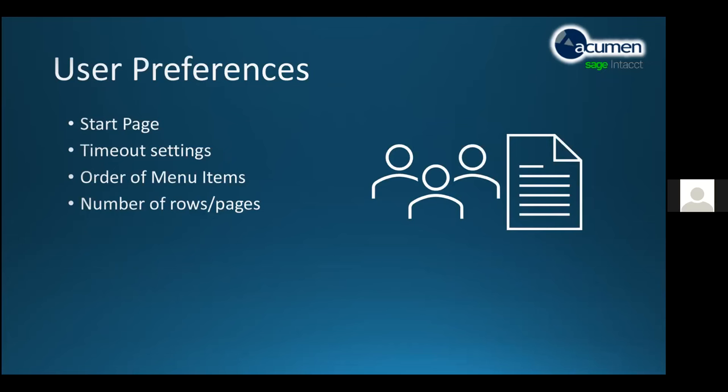When you log into the system, you can control a number of different things. You can control where you start — is it on a dashboard, in the general ledger, or on the home screen so you can easily switch from entity to entity. You can control when the system times out, what your menus look like, and the number of rows and pages. So if you're doing long sales orders and you want more than five rows, you can set that to maybe a thousand rows.